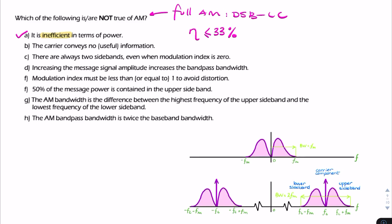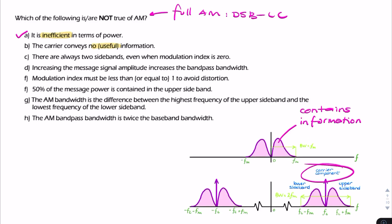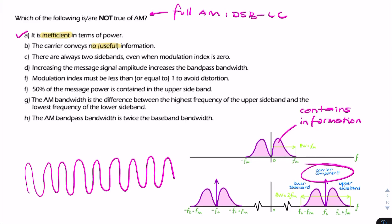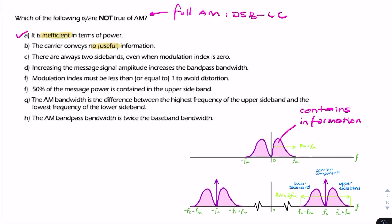Statement B says the carrier contains no information. The purpose of modulation is encoding useful information onto a carrier. The message contains your useful information — the message isn't the information itself, but it contains the information. The carrier, however, is simply a high-frequency sine wave and doesn't contain any information. So statement B is correct: the carrier contains no useful information.